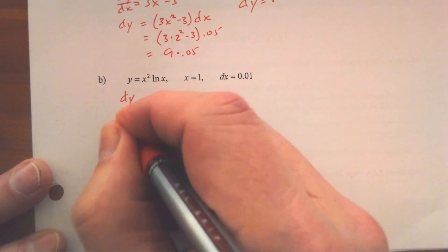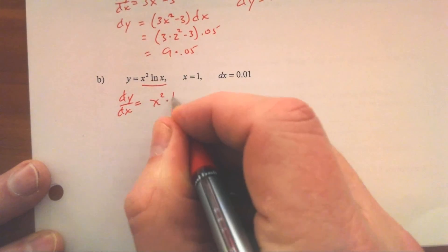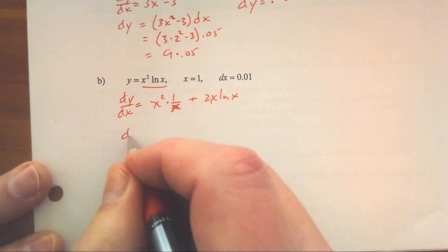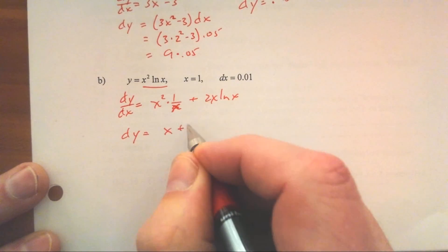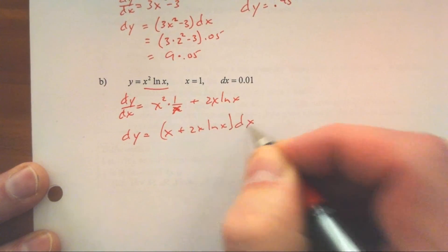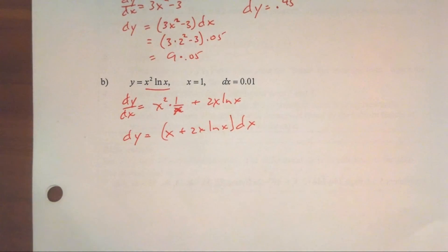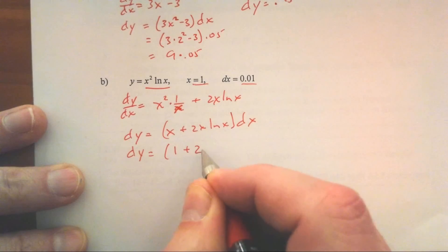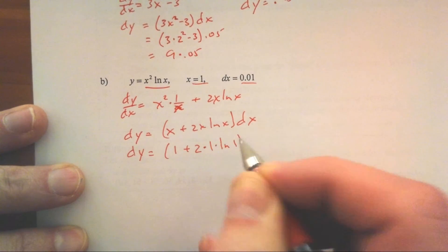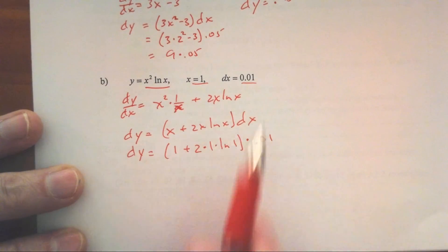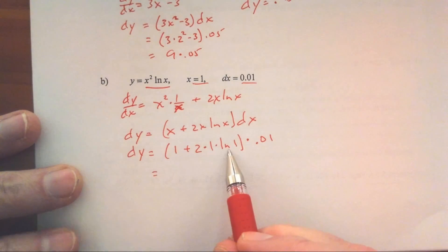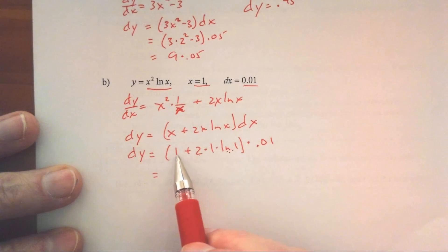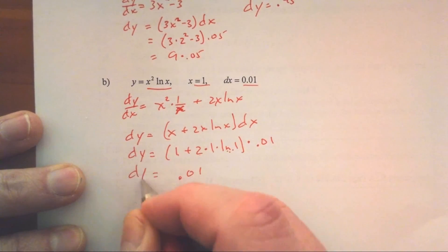Same process for a product rule example. Start with dy/dx using the product rule: first times derivative of second, plus derivative of first times second. So dy equals (x + 2x ln x) dx. Now evaluate at x equals 1 and dx equals 0.01. dy equals (1 + 2(1)(ln 1))(0.01). Since ln(1) equals 0, this becomes (1 + 0)(0.01) equals 0.01. So dy equals 0.01.